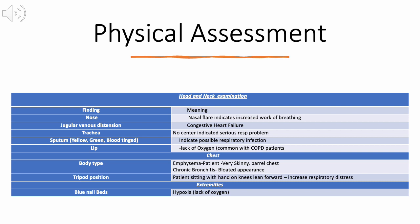Both a too-fast and too-slow respiratory rate are concerning. A slow rate could indicate a narcotic overdose or suppression of the respiratory center of the brain, while a very fast rate indicates the body is attempting to maximize oxygen intake, possibly in response to anxiety or pain. If the patient coughs up sputum, observe its color and check for any blood, as this could indicate a respiratory infection.